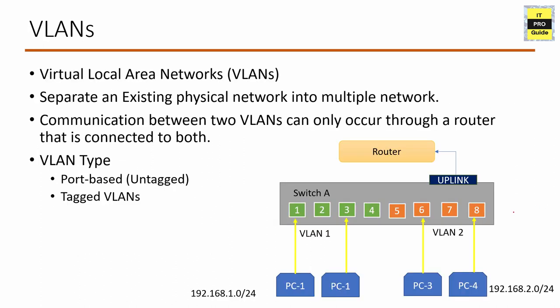Moving on to Virtual Local Area Networks — VLANs — which separate an existing physical network into multiple logical networks. For example, you have a single physical switch in your organization and you connect devices of different departments into that switch. By assigning VLANs to the switch, you can divide it into multiple logical switches for each department.